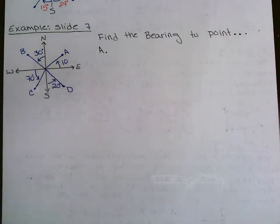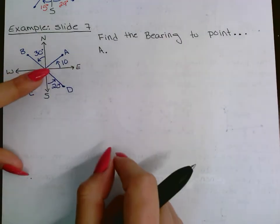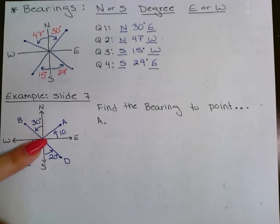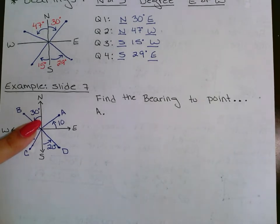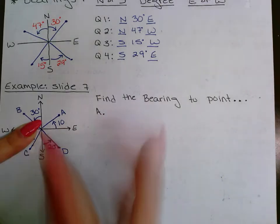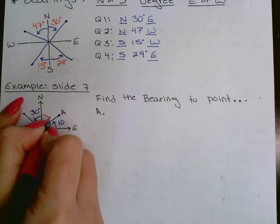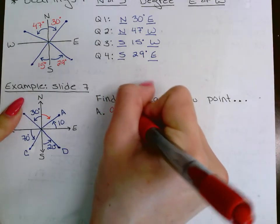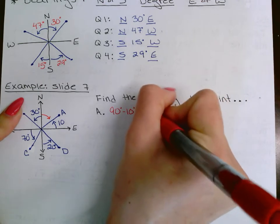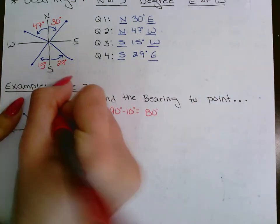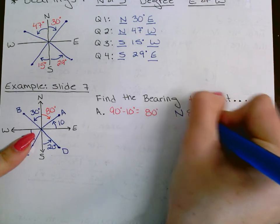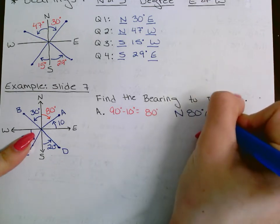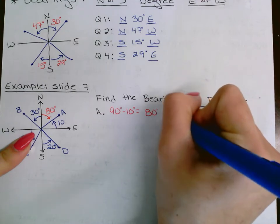Looking at the diagram with four labeled points: Point A is in quadrant 1, but they gave the angle from the x-axis (10°), so they're trying to trick us. We need north-to-east, so take 90° − 10° = 80°. The bearing for point A is N 80° E.